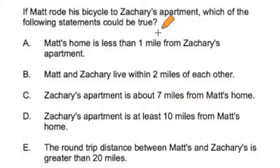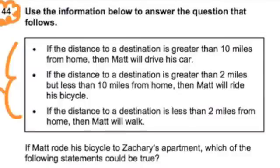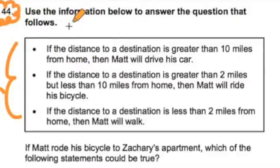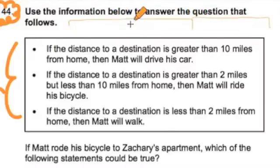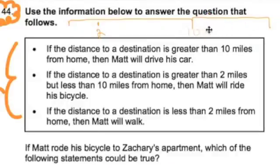There's lots of wording and information here. The first thing I'm going to do after reading it over is go back to the scenario and organize the information. I'll make a little chart here for myself — I have 2 miles, 10 miles, and this will be 10 miles plus.